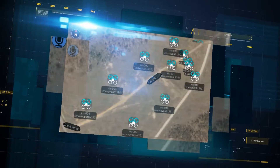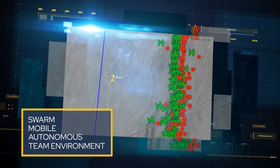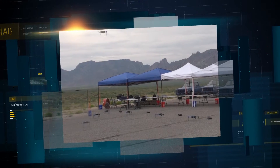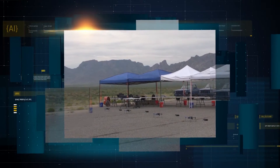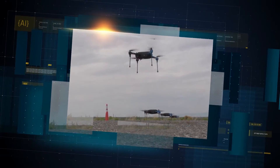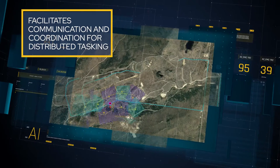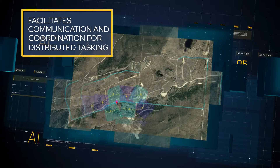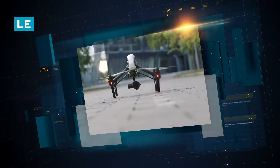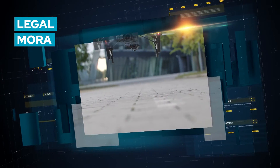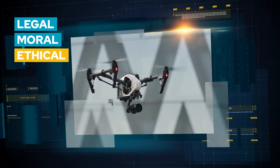Swarmate. SorTech's Swarm Mobile Autonomous Team Environment is a distributed autonomy software framework that controls individual and teams of autonomous unmanned systems. It facilitates communication and coordination for distributed tasking under legal, moral, and ethical functional parameters.